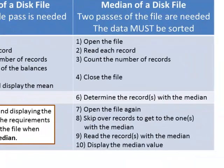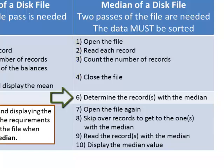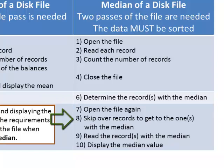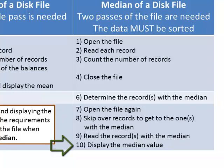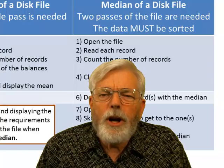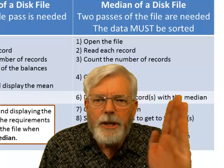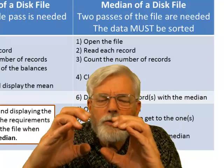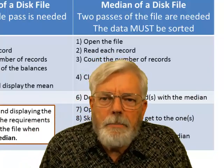Computing the median, I need to open the file, read each record, and count the number of records. This is going to be a two-pass process. In the first pass, I find out how many records are in the list, then determine which one is the median. I open the file again, skip over records until I reach the one I need, and read that record to find the median value. If I have an even number, I have to skip all the way, then read two values, take the average, and that becomes my median value.